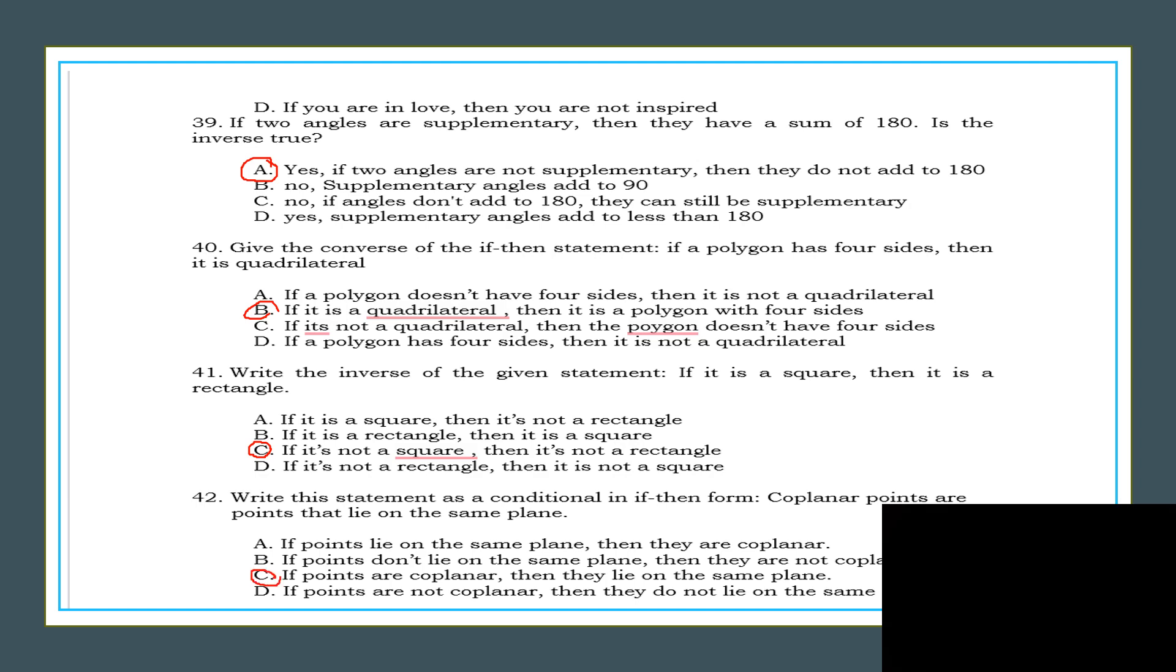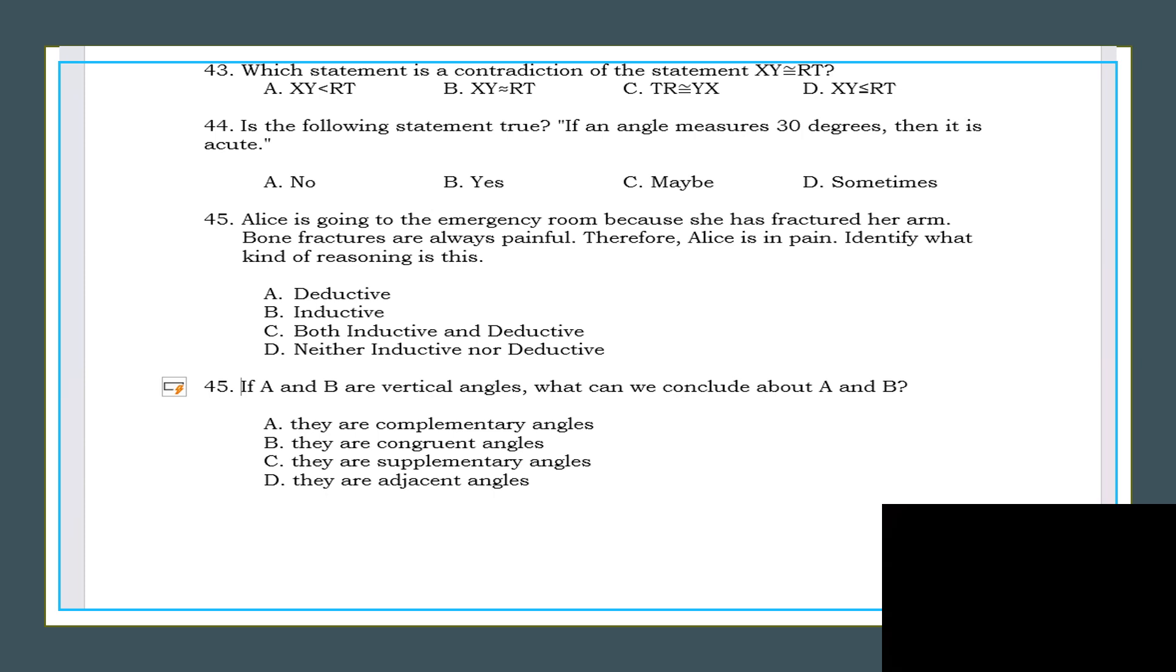Next, which statement is a contradiction of the statement: XY is congruent to RT? The answer is A. It's a contradiction because it says XY is less than RT. Next, 44. Is the following statement true: if an angle measures 30 degrees then it is acute? The answer is yes, it's true. Further, 45. Alice is going to the emergency room because she has a fractured arm. Her arm bone fracture is always painful, therefore Alice is in pain. Identify what kind of reasoning is this. Yes, the answer is inductive.